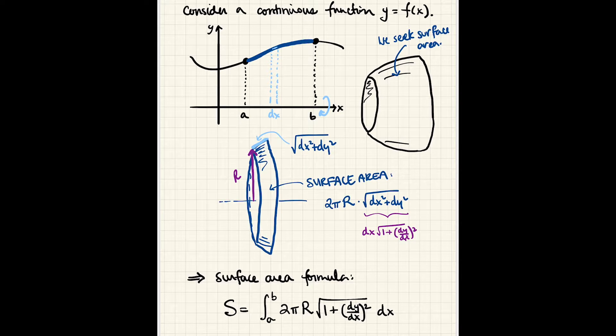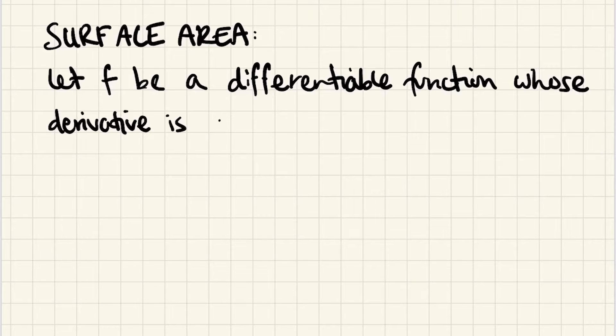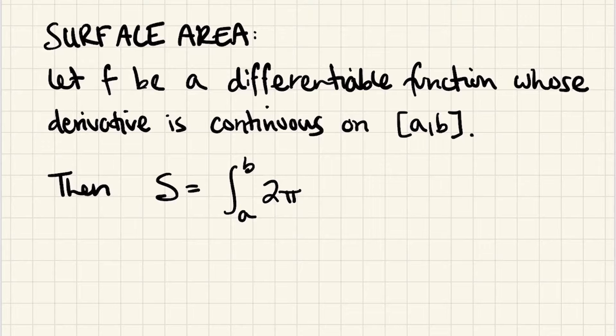So I want to write down a more general surface area formula with that in mind. So as before, let's let f be a differentiable function whose derivative is continuous on the interval from a to b. Then our surface area is going to be the integral from a to b of 2 times pi times, and let's leave this blank. This is kind of our r, and we'll come back to that.